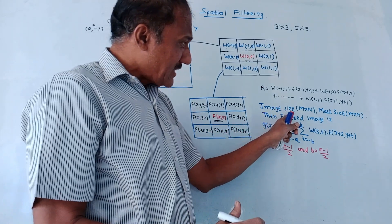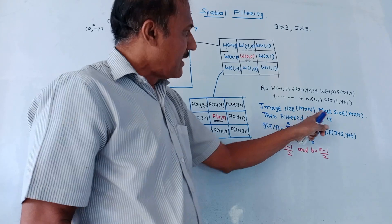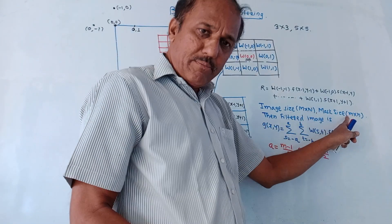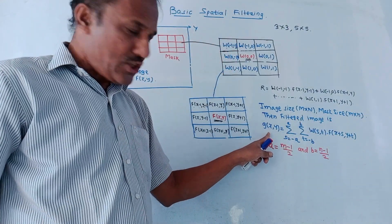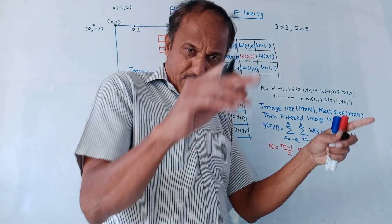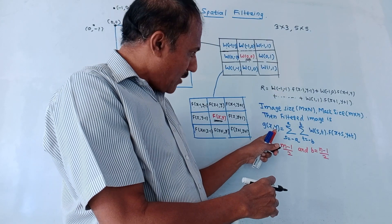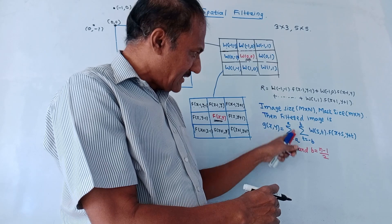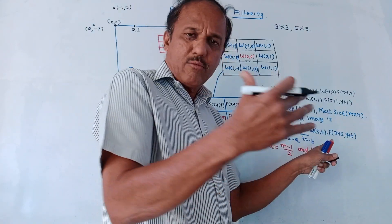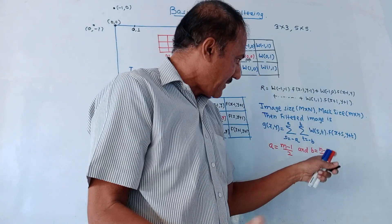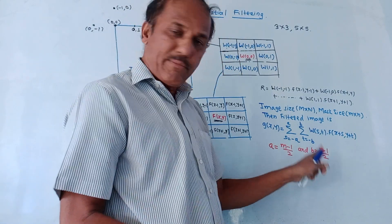If the image size is M by N — M rows and N columns — and the mask size is m by n — small m number of rows, small n number of columns — then the filtered image is given by g(x,y). The original image is f(x,y), so after filtering the image you get is g(x,y) = summation from -a to +a, second summation from -b to +b, of w(s,t) times f(x+s, y+t), where a = (m-1)/2 and b = (n-1)/2.